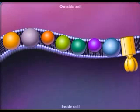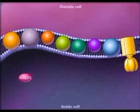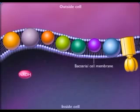During glycolysis and the tricarboxylic acid cycle, oxidation of organic molecules results in production of reduced coenzymes such as NADH. These coenzymes transfer hydrogens to the electron transport chain, which is located in the bacterial cell membrane.